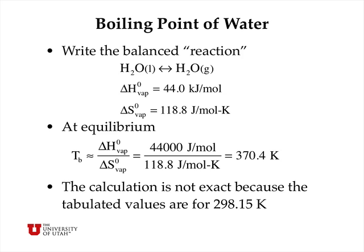Similarly, we can calculate the boiling point of water. First, we write the balanced reaction between liquid water and gas phase water. Delta H of vaporization is 44 kilojoules per mole — this is endothermic, of course. And delta S of vaporization is 118.8 joules per mole per Kelvin. Again, entropy favors the products and enthalpy favors the reactants. We can set delta G equal to zero and solve for the boiling point, and that turns out to be 370.4 Kelvins, which is just a little bit less than 100 degrees Celsius.